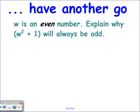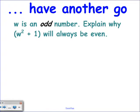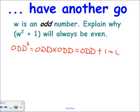W is an even number — explain why W squared plus 1 will always be odd. W squared is even times even. Even times even gives even, plus 1 gives odd. For an odd W: odd squared is odd times odd, which gives odd. Odd plus 1 gives even. Did everyone get that? That's what they're after for the mark.